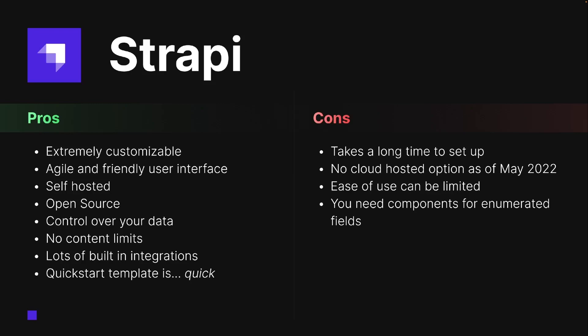One big thing Strapi introduces is components. It's all about customizability with Strapi, but you don't have enumerated fields by default, so you have to create your own enumerated fields using components, as far as I'm aware.